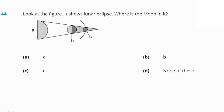The given figure shows a lunar eclipse. In a lunar eclipse, the Earth comes between the Sun and the Moon. Looking at the figure, the Moon is at position C. Option C is our right answer.